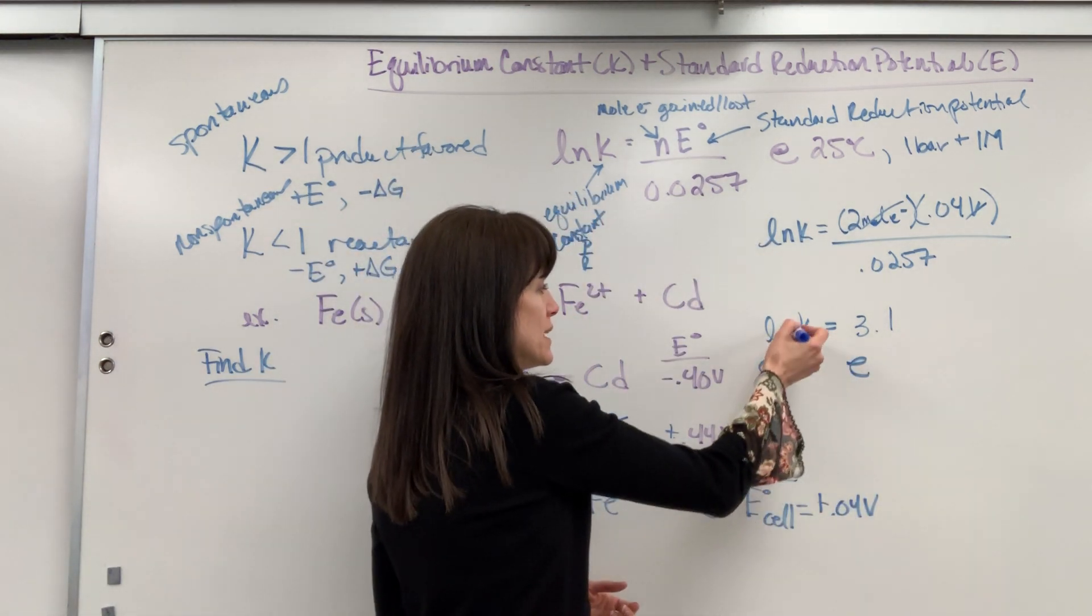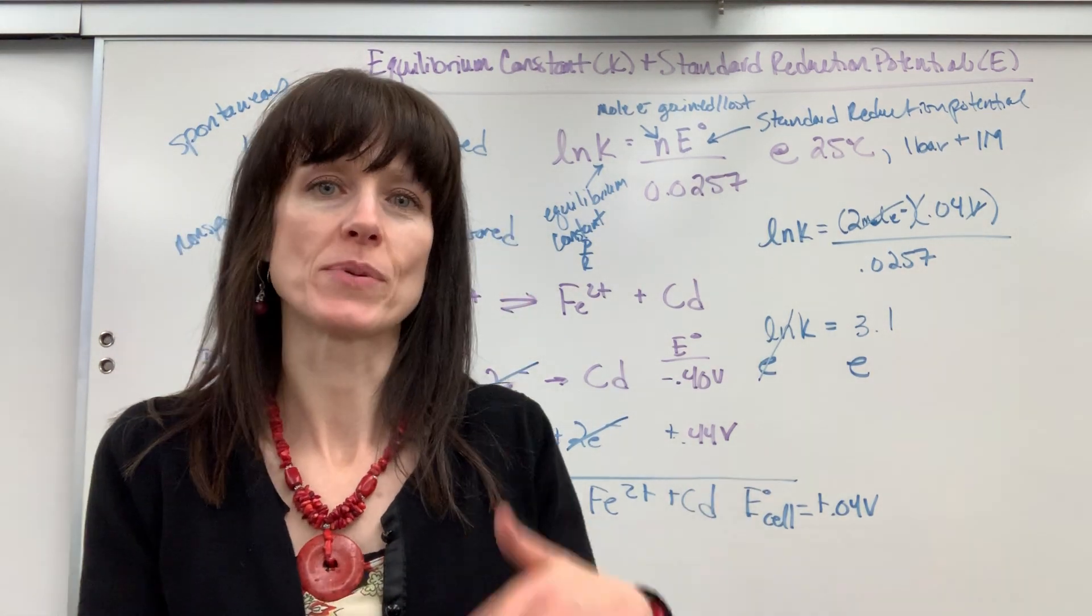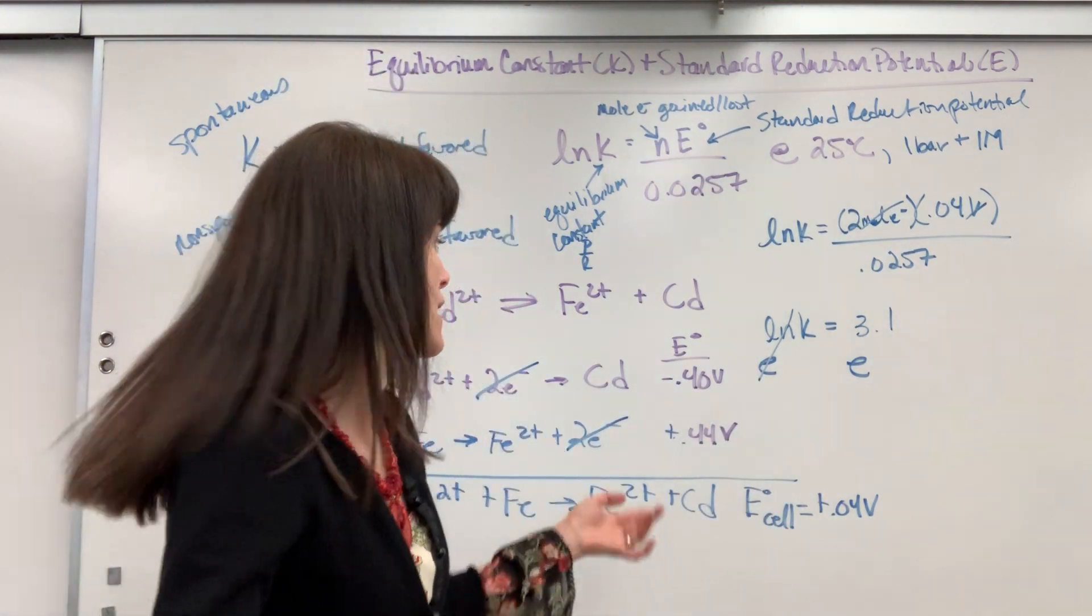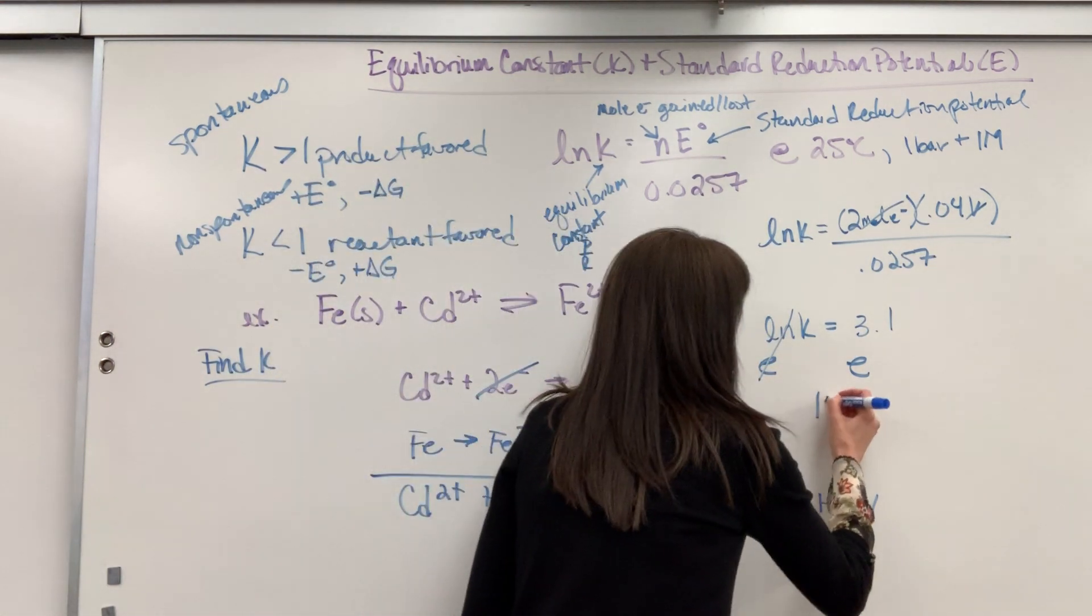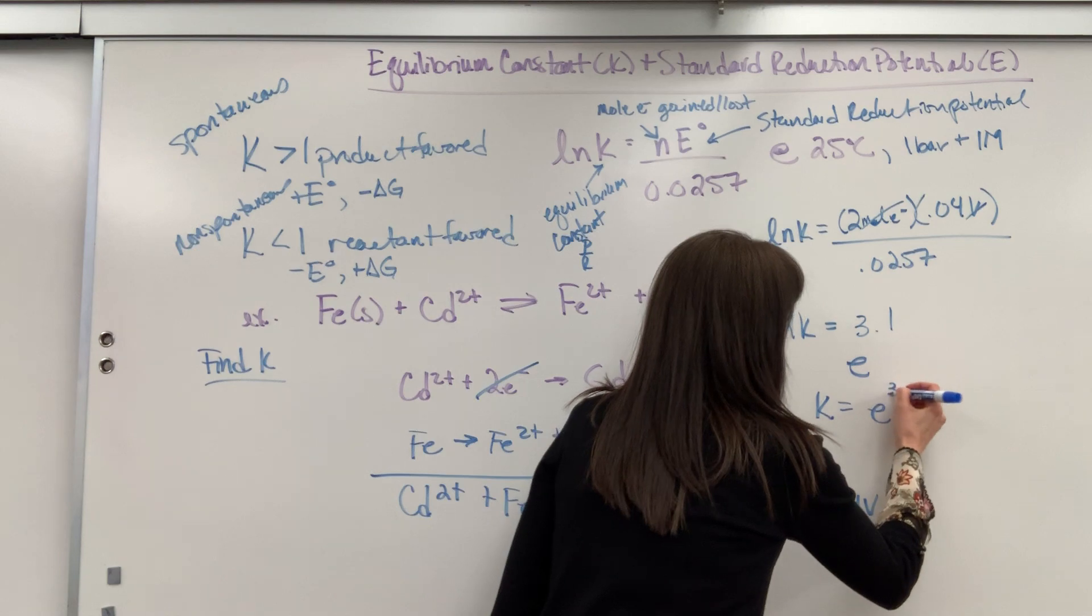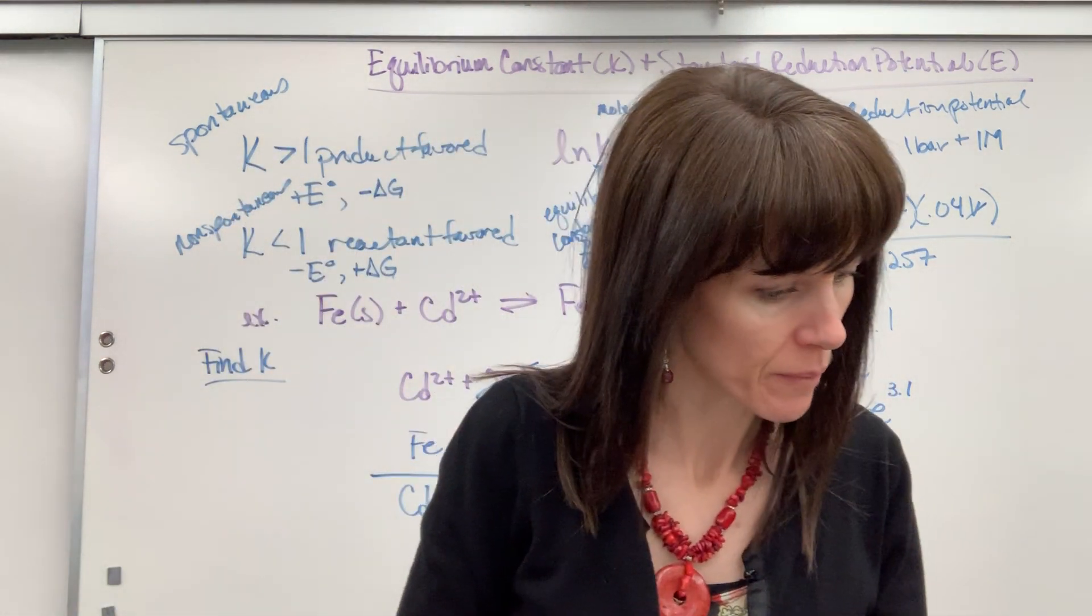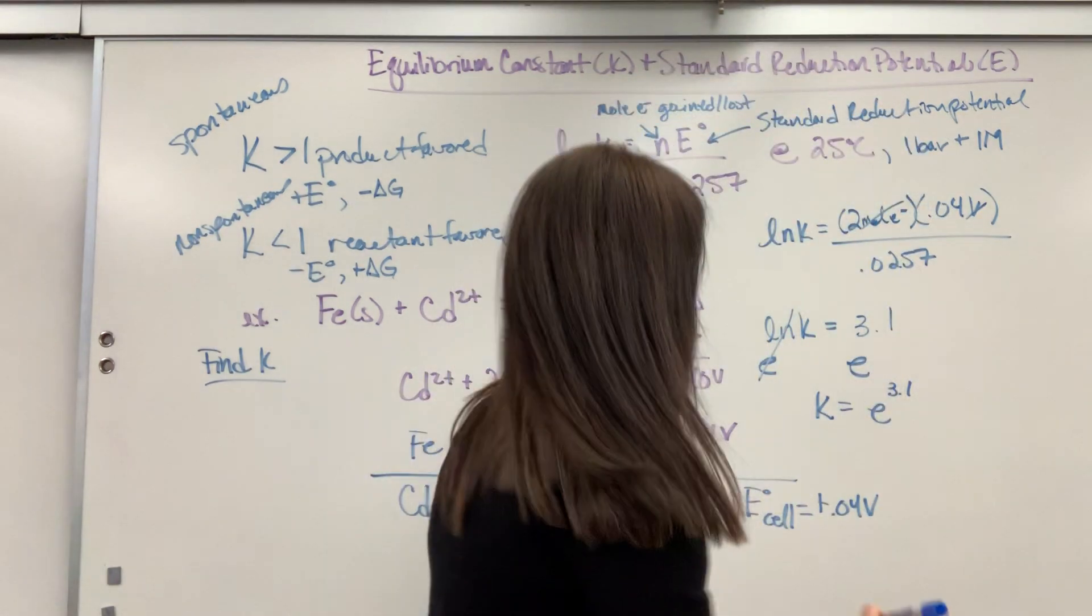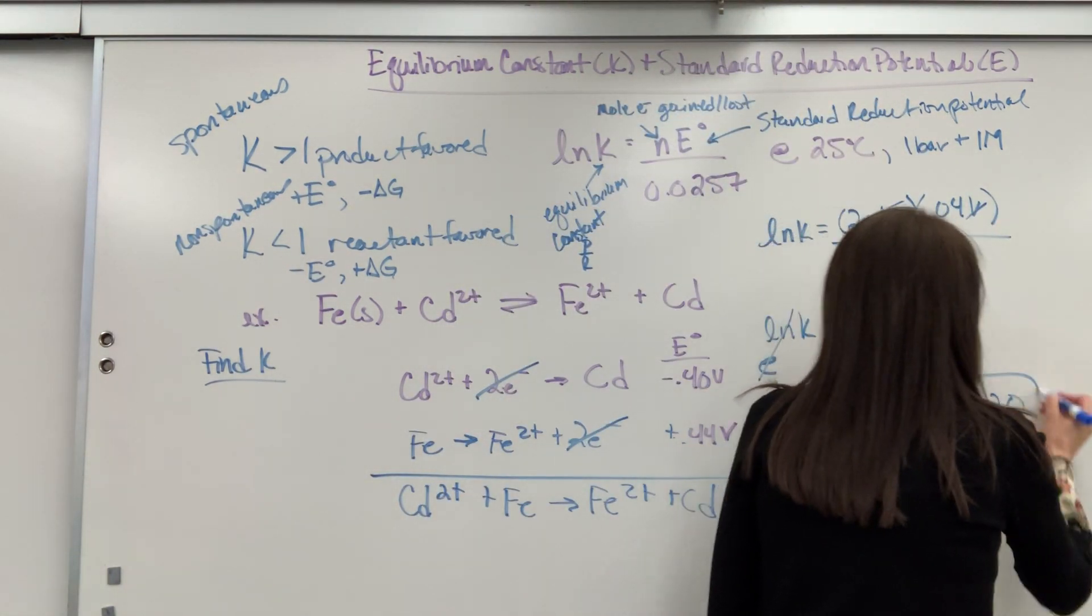The e will cancel out that natural log, undoes the natural log. It's just like the opposite of addition is subtraction. That's how you get rid of the natural log. So K will equal e raised to the power of 3.1. When you put it into your calculator, K will equal 20.